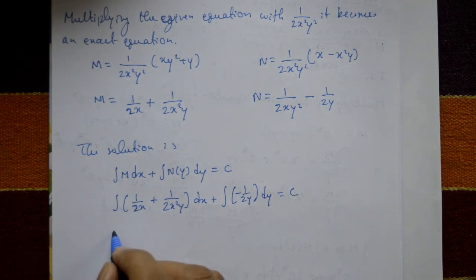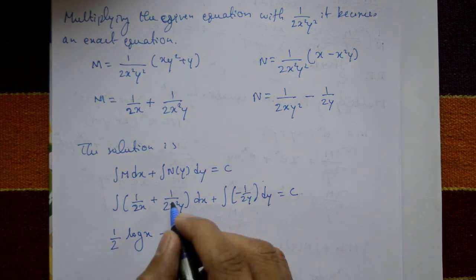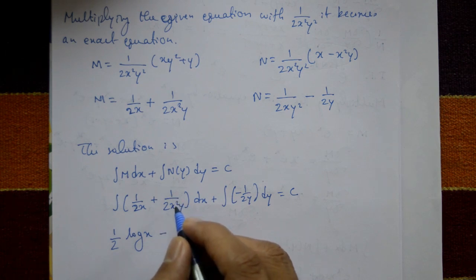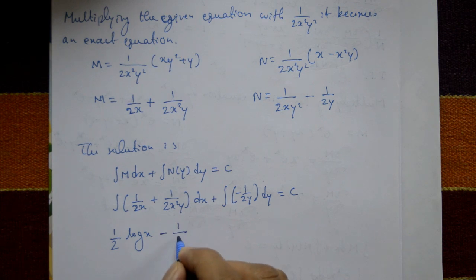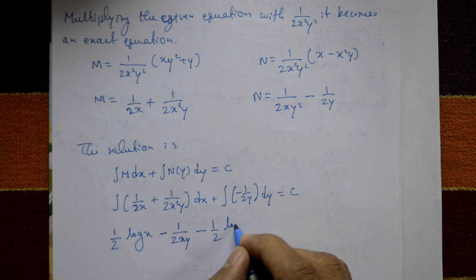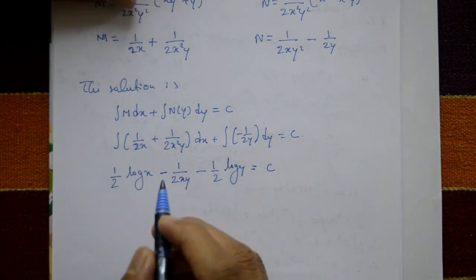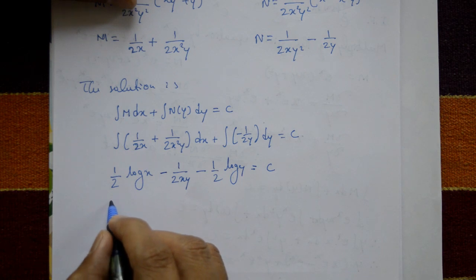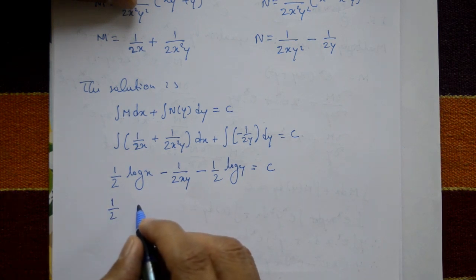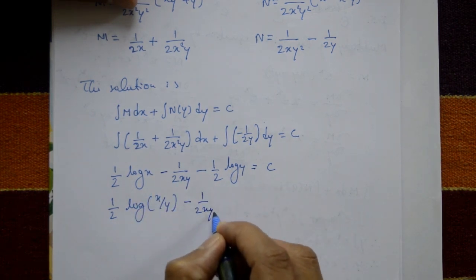Integrating: 1/2 is a constant, integral of 1/x is log x. Then 1/(2y) is a constant, integral of 1/x² gives minus 1/x, so that term is minus 1/(2x·y). Minus 1/2 times integral of 1/y is log y, equals C. Using log property log a minus log b equals log(a/b), with 1/2 common: log(x/y) minus 1/(2xy) equals C.